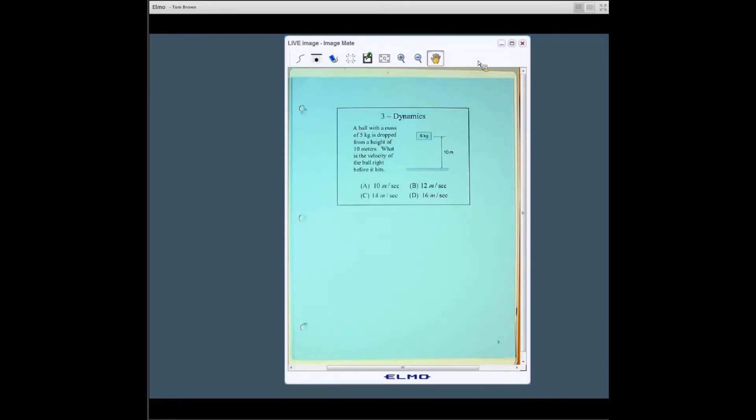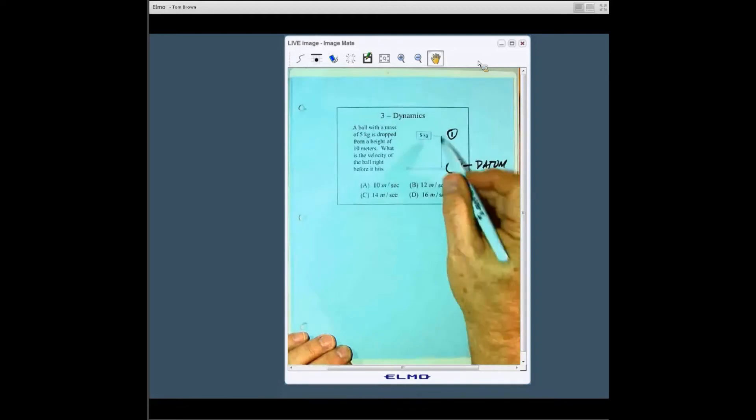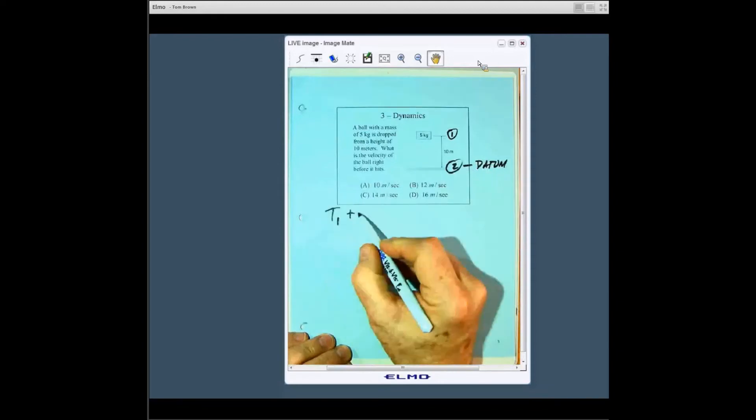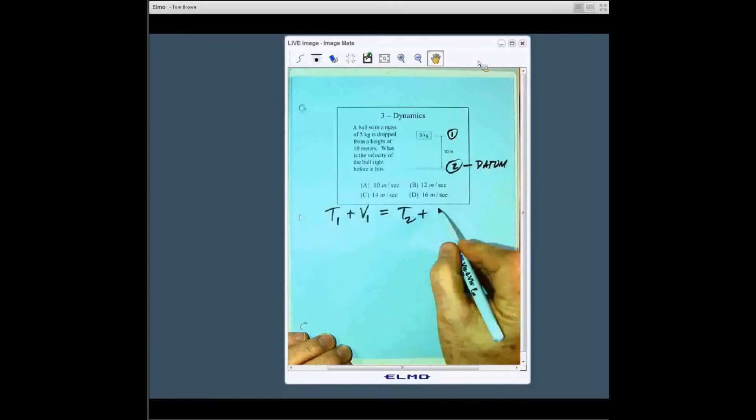This is probably the most famous of the conservation of energy problems. Up here of course we're starting at one and we're going to be going down to here to two. I'm going to use this as the elevation datum. I make that zero, so therefore the height is 10. So we have T1 plus V1 equals T2 plus V2.